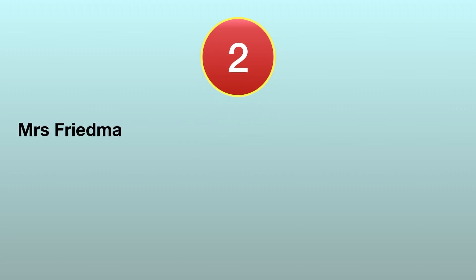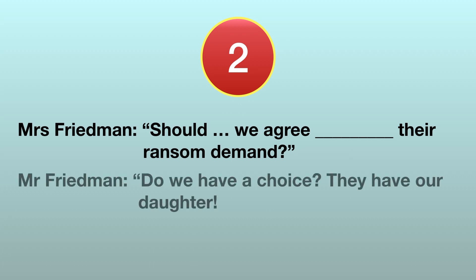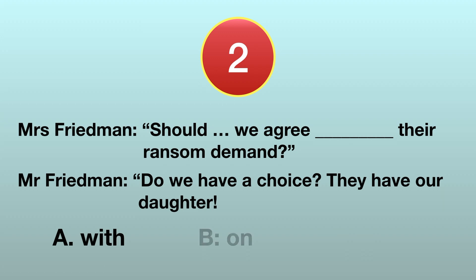Number 2. Mrs. Freeman asks: Should we agree the ransom demand? Mr. Freeman responds: Do we have a choice? They have our daughter. A. With, B. On, C. To.